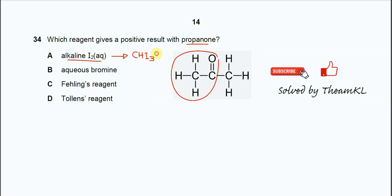This yellow precipitate is a positive result with propanol. When alkaline iodine reacts with propanol, it will give yellow precipitate.